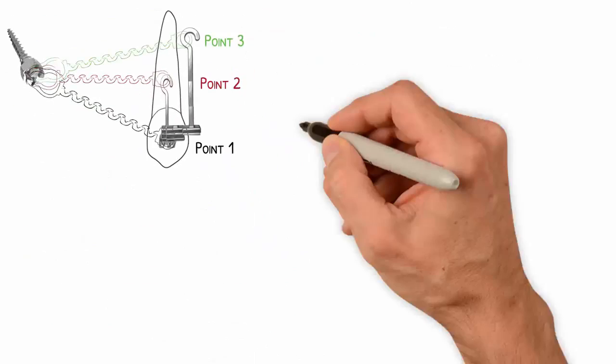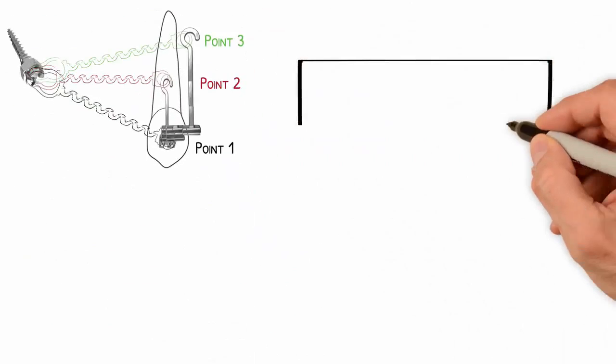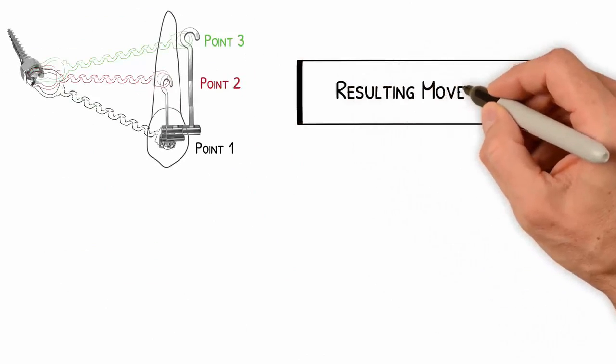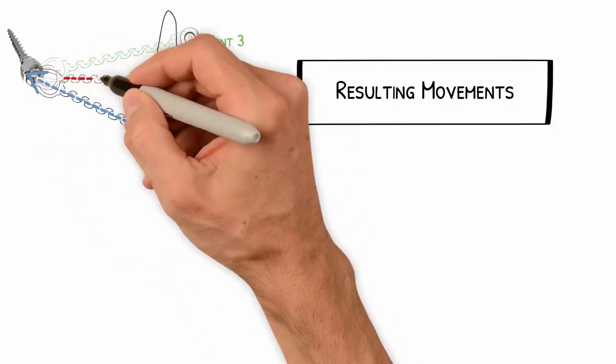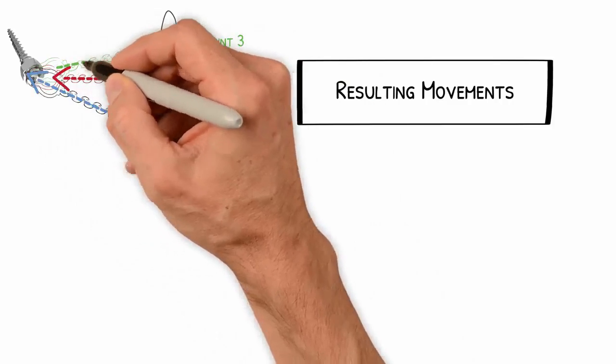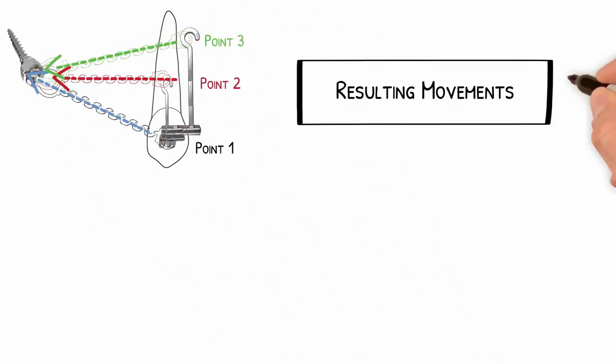To conclude this explanation, we will try to predict the resulting movements in our initial example, from which we selected three distinct application points, which also established three different lines of force action. Do you think the resulting movements will be similar? Obviously not. Since we have three different lines of force in each situation, we can certainly predict three distinct dental movements according to the chosen line of action.